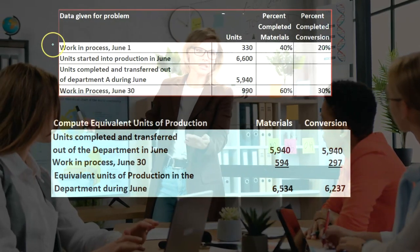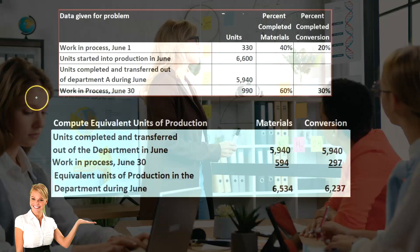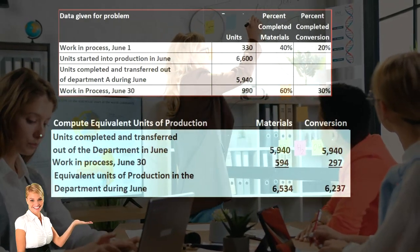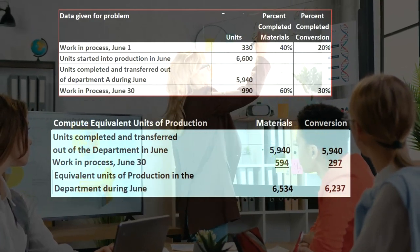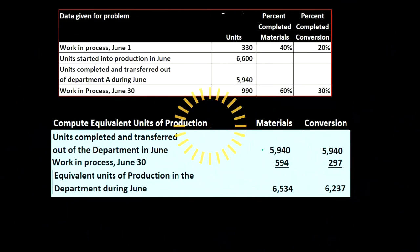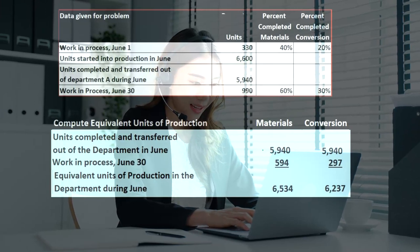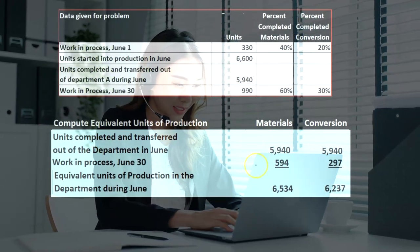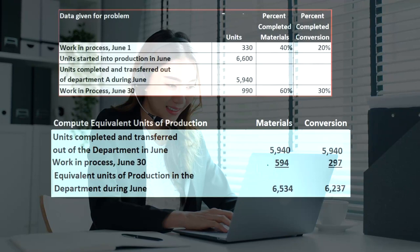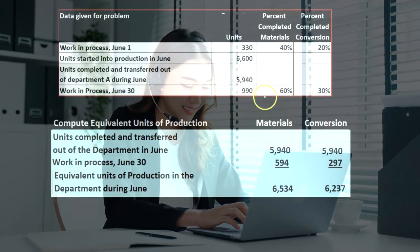Note what we are not doing in this process: we're not breaking out the beginning work in process as we would do under a first-in, first-out method, because we're using the weighted average method. Under a first-in, first-out method, we would assume that part of the cost of units completed was started in the prior time period and we'd have to break out the current cost just for this time period. In this case we're averaging those out — taking these amounts even though part of the cost was from the prior period.